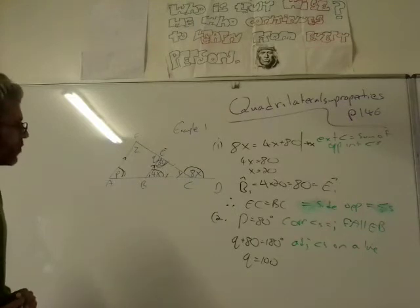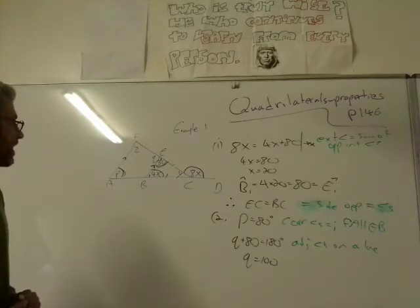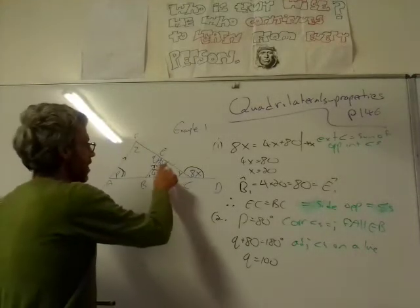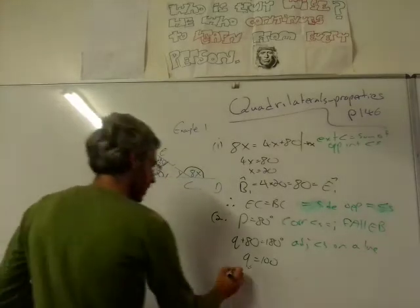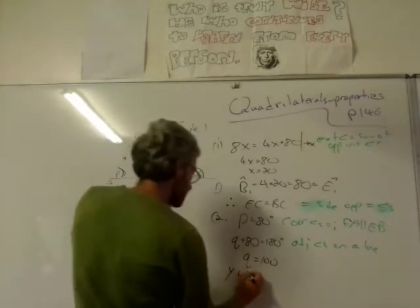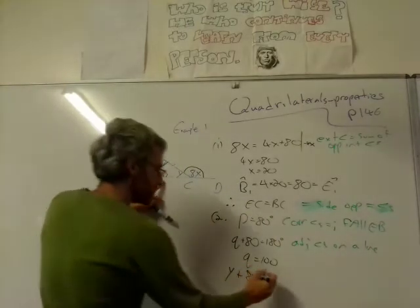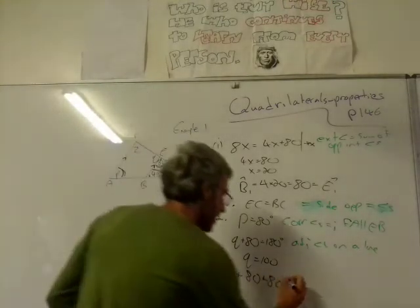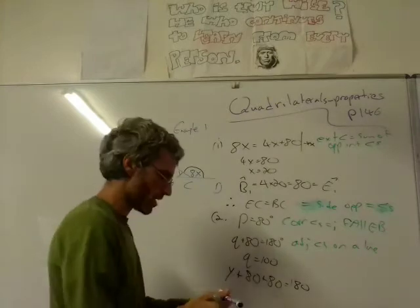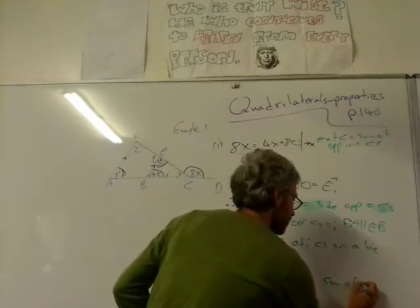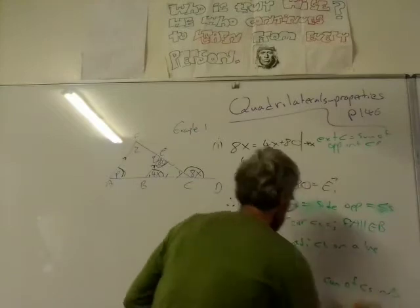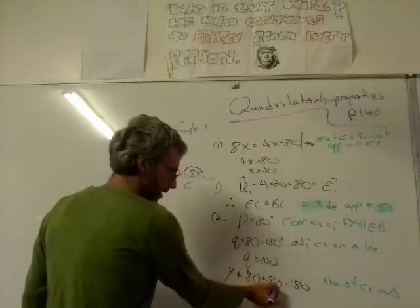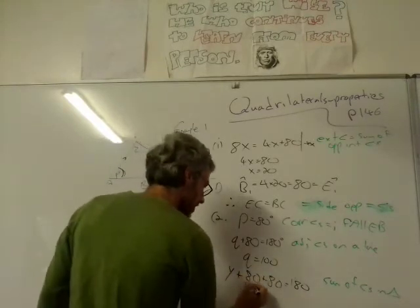Next one will be Y. How do I figure out Y? Y plus 80 plus 80—we know this is 80, this is 80—what does that have to be equal to? 180. And why is that? Sum of angles in a triangle. Sum of angles in a triangle will always get to 180. So 80 plus 80 is 160, so Y equals 20.